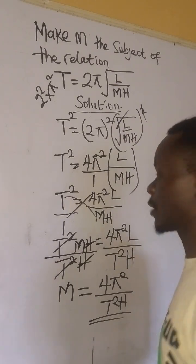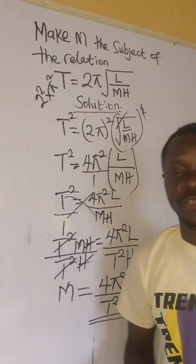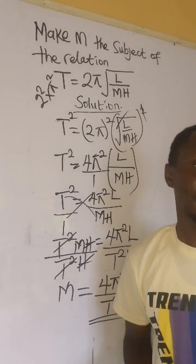So this is our final answer: m = 4π²l/T²h. Thank you for watching. Please like, comment, and follow.